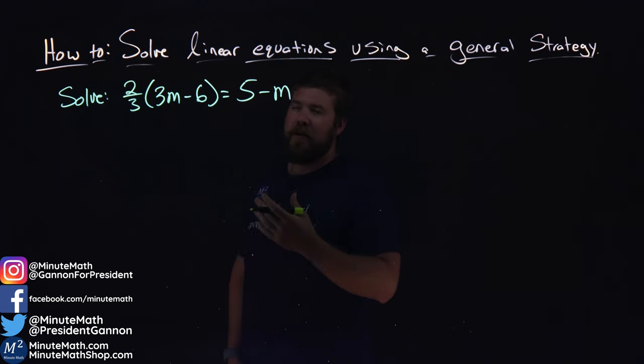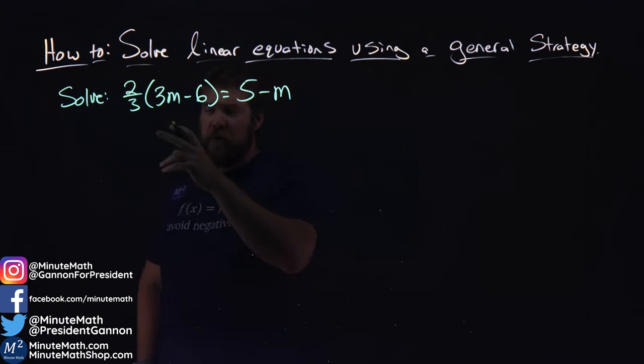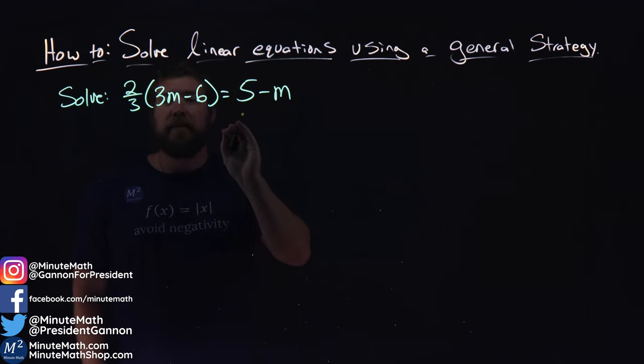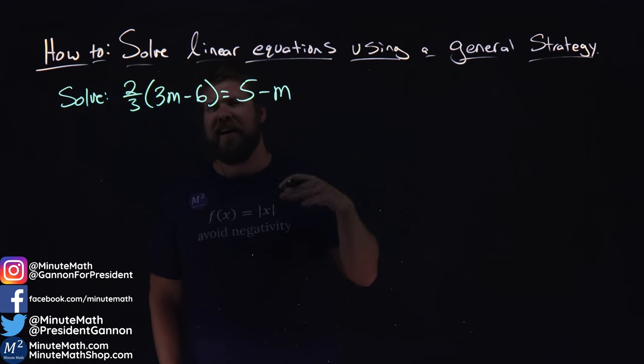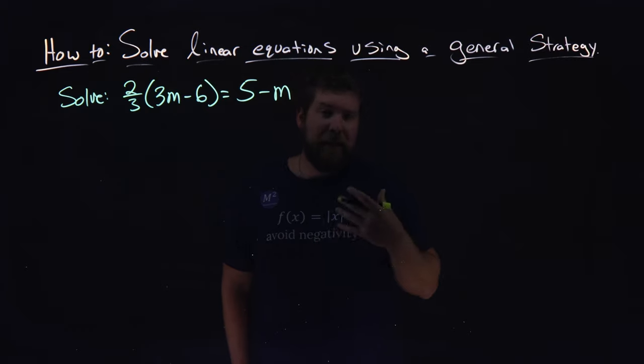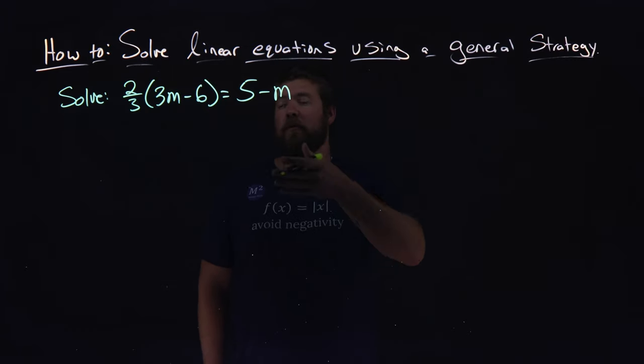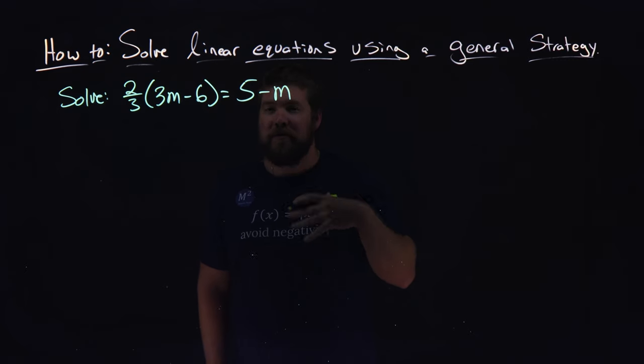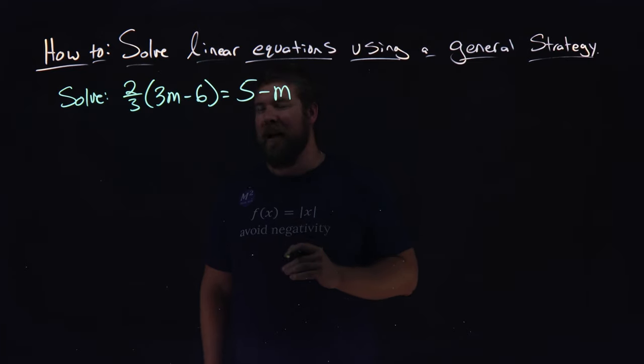The example we have here is 2 thirds times 3m minus 6 equals 5 minus m, and we want to solve this linear equation. When you see many different linear equations to solve for the variable, they're all going to be mostly different, but we can follow this general strategy here to try to simplify or solve for m.